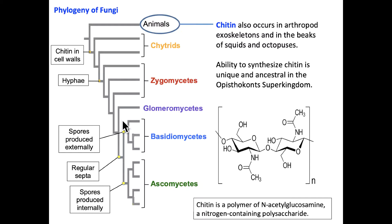Both fungi and some animals contain chitin. For instance, arthropod exoskeletons and the beaks of squids and octopuses are made of chitin. Thus, chitin is not a distinguishing feature between fungi and animals — it's the presence of the cell wall that is a distinguishing feature. Chitin is a more ancestral feature. Chitin is a polymer — a long, repeated chain of the same molecule — specifically a polymer of N-acetylglucosamine, which is a nitrogen-containing polysaccharide.